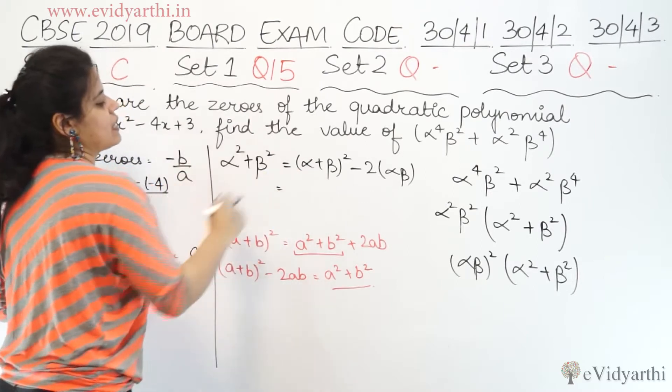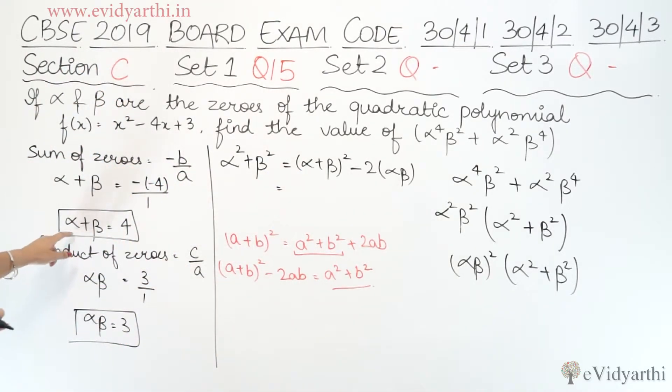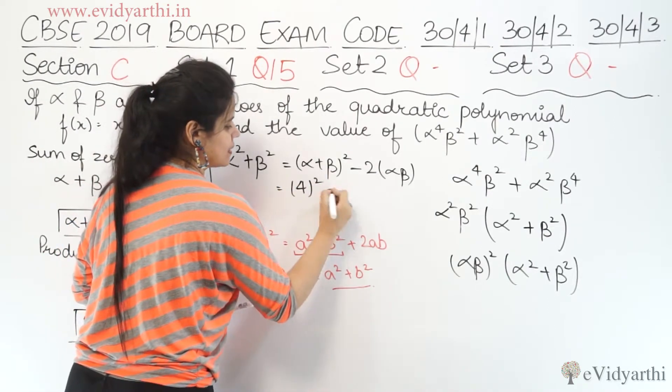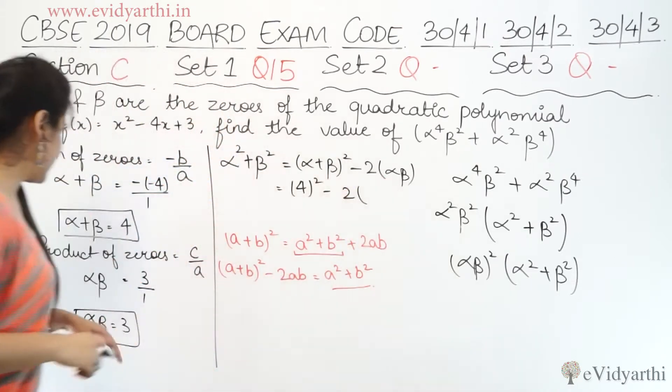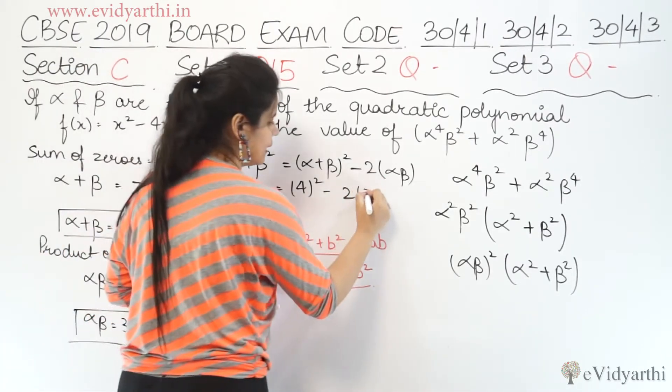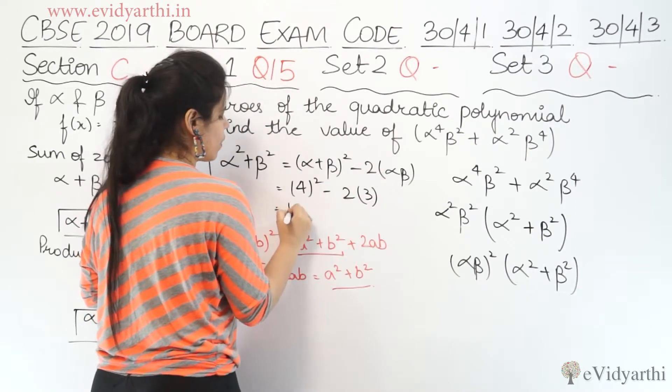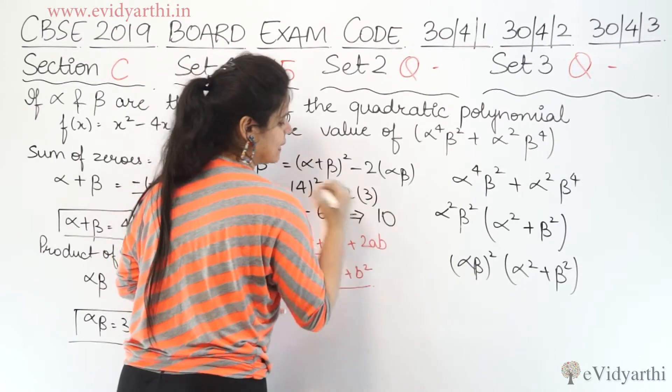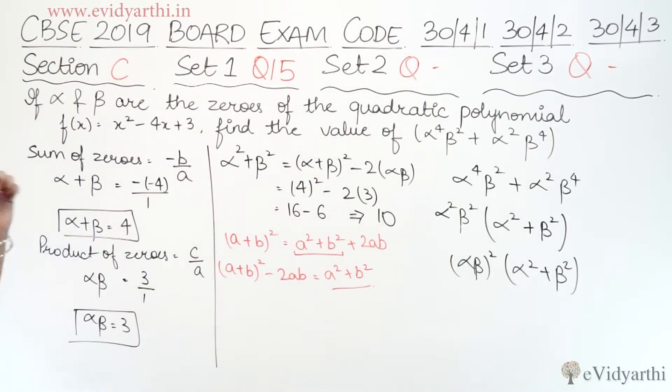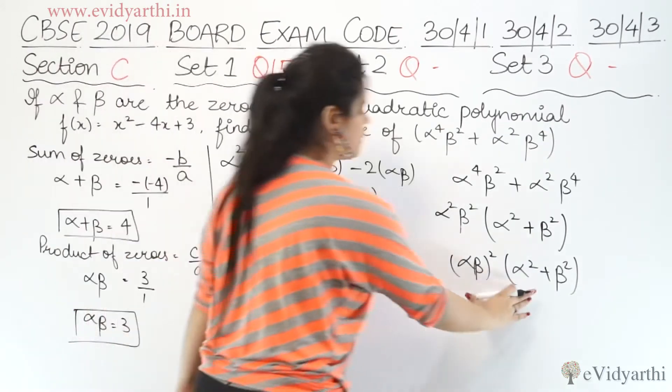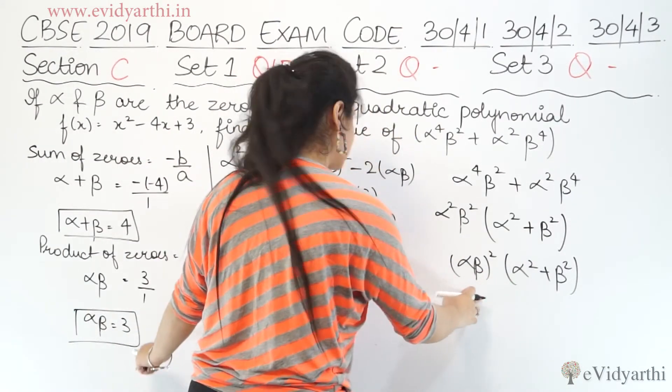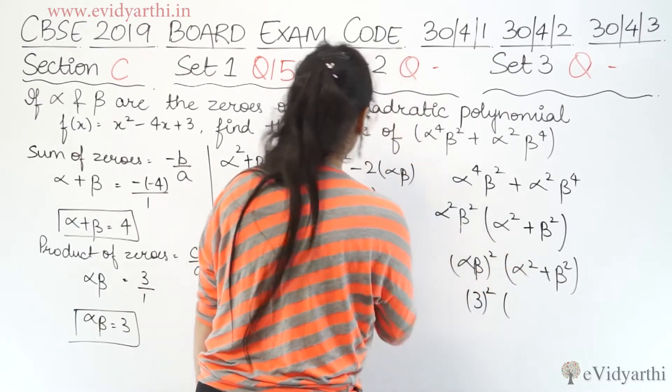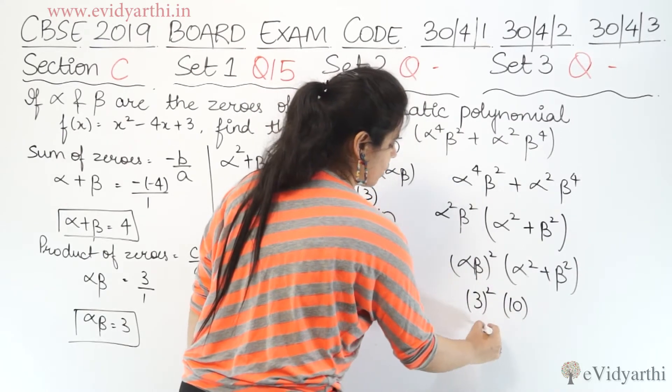Now let's put the values. Alpha plus beta, here we have sum of zeros, alpha plus beta is 4, so this is 4 squared. Alpha square plus beta square, and alpha into beta is 3, so 4² is 16, minus 2 times 3 is 6, so 16 minus 6 is 10. So α²β²(α² + β²) = 3 times 10 = 90.